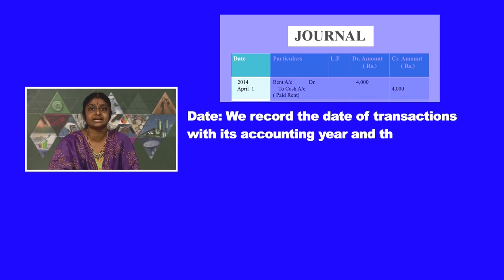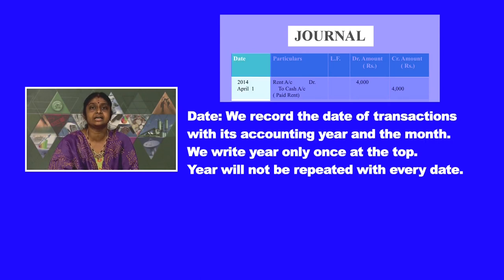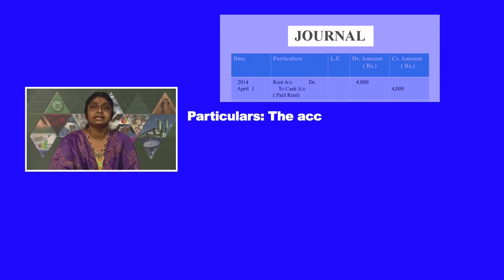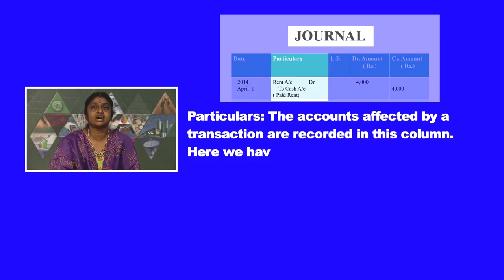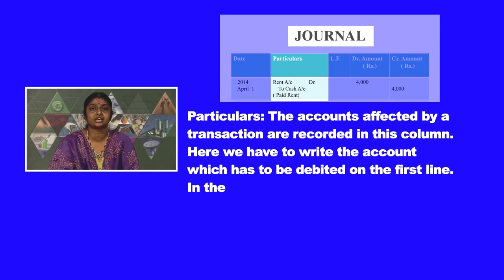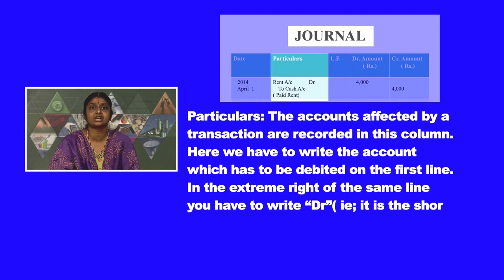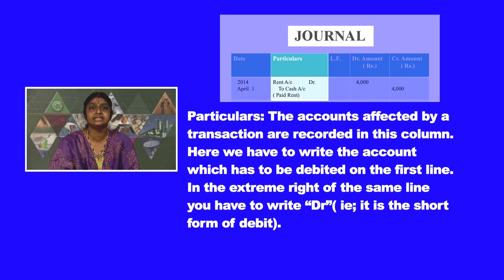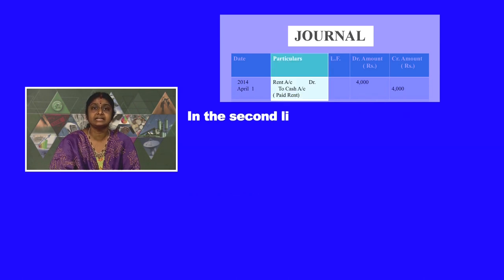In the date column, we record the date of transactions with its accounting year and month. We write the year only once at the top — it will not be repeated with every date. In the particulars column, the accounts affected by a transaction are recorded. We have to write the account which has to be debited on the first line, and in the extreme right of the same line, you write DR, which is the short form of debit. In the second line, the account which has to be credited is written.